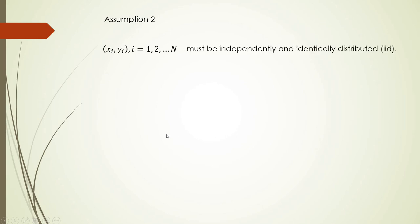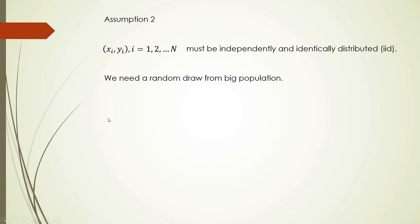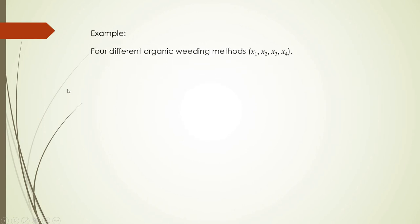The second assumption is that every pair of our independent and dependent variable must be independently and identically distributed — IID. We actually need a random draw from a big population. We know in advance that X values are given and Y is a random variable, but all these pairs must be mostly randomly distributed.